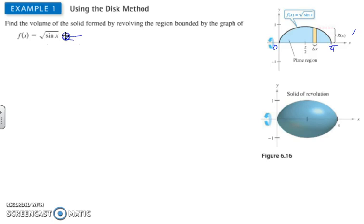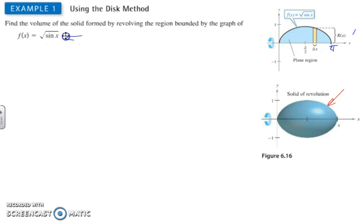What's going to happen is we can imagine infinitely many little rectangles that would go spinning around the x-axis to create what would look like a three-dimensional solid. How would we find this volume?